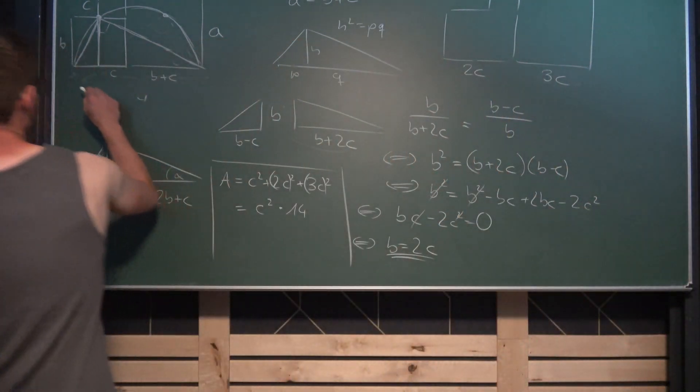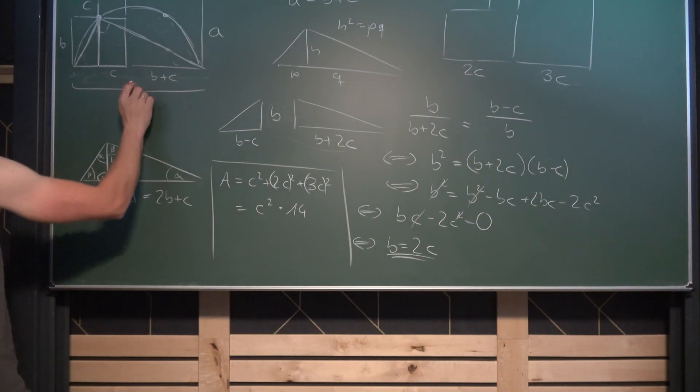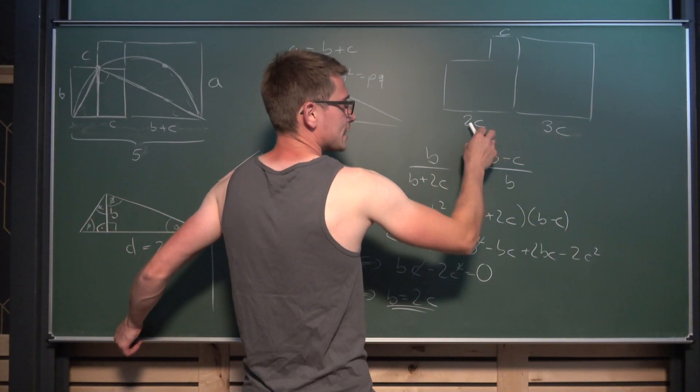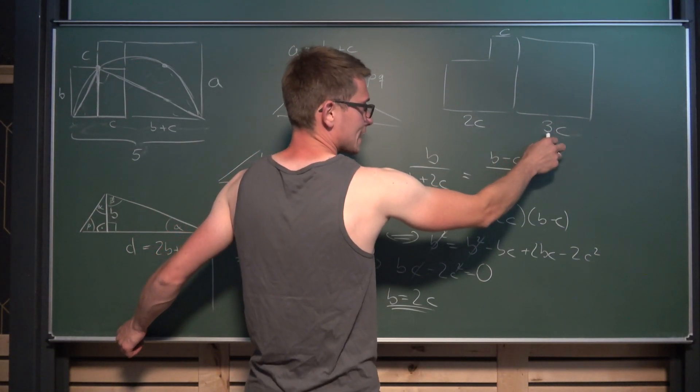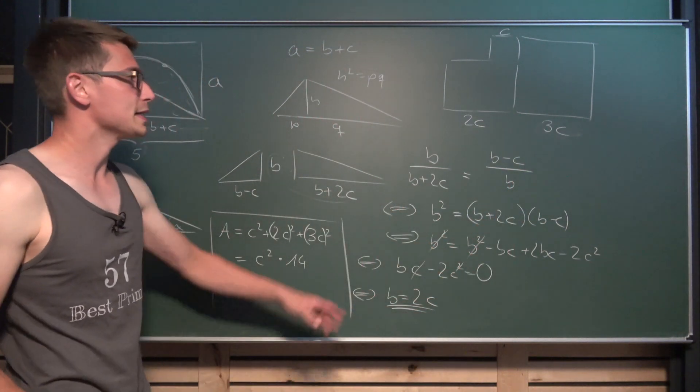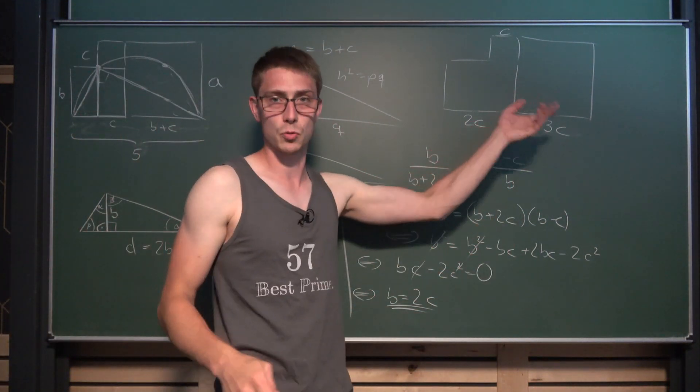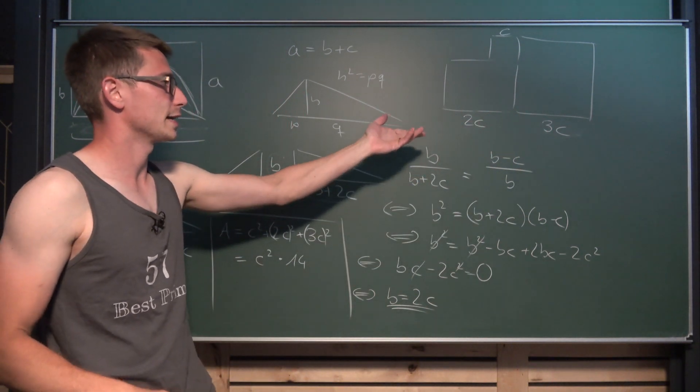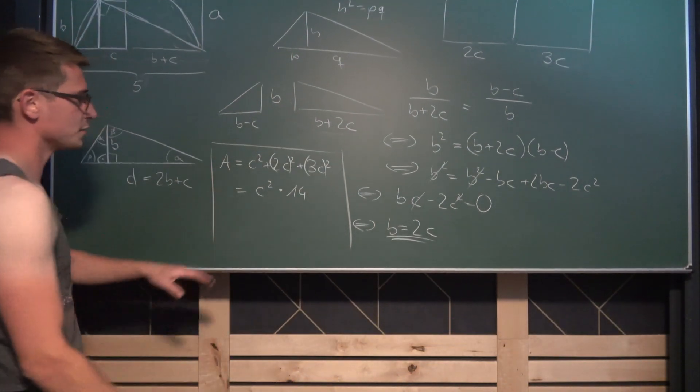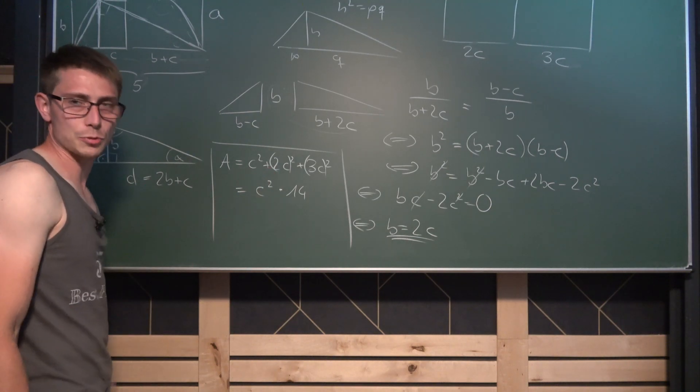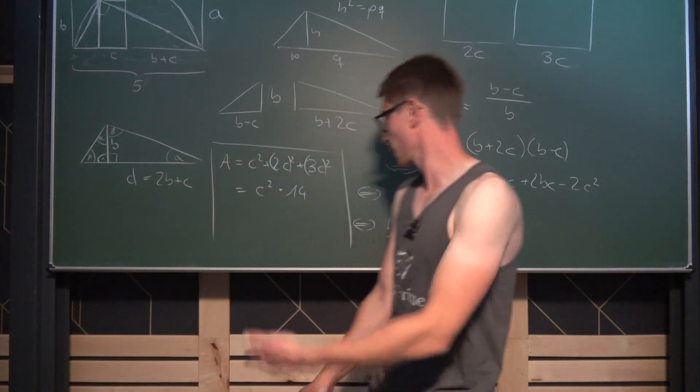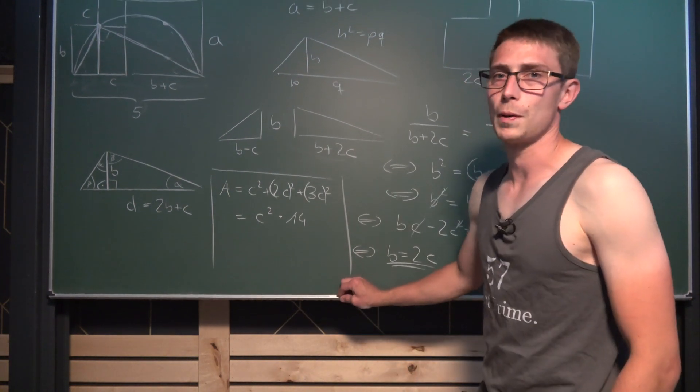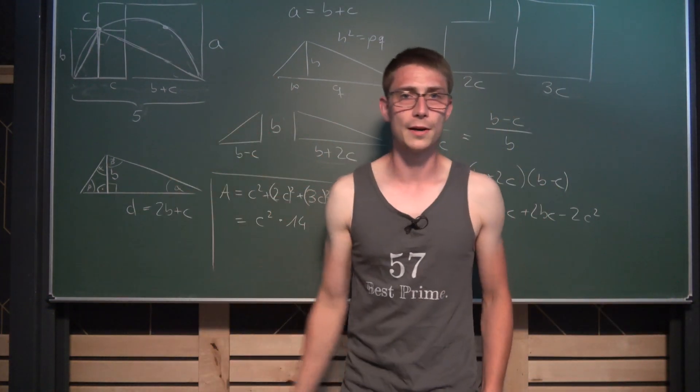And if we take a look at our original problem where the diameter must be equal to 5, then we get 2C plus 3C is equal to 5, meaning this only holds for C being equal to 1 because this is 5C combined. So if we plug C equal to 1 in here, we get the total area to be 14 area units.